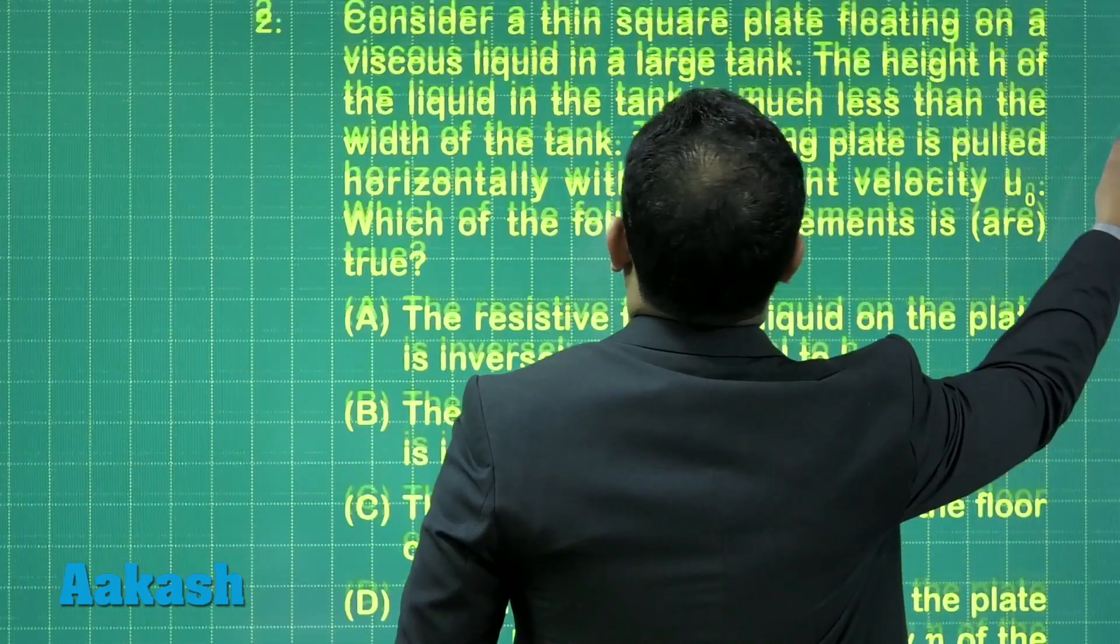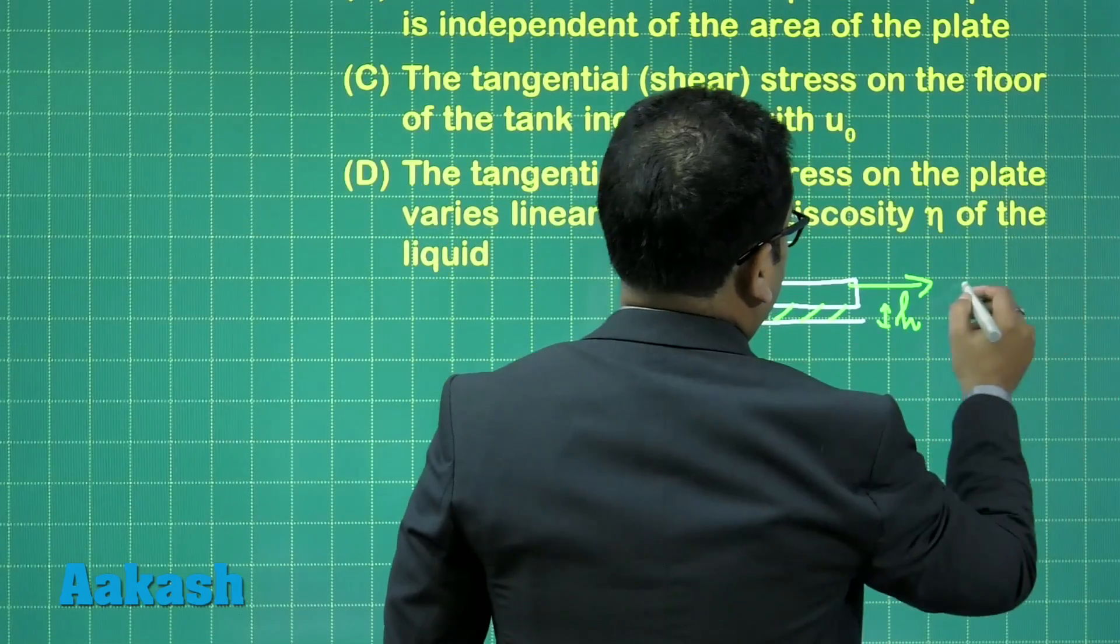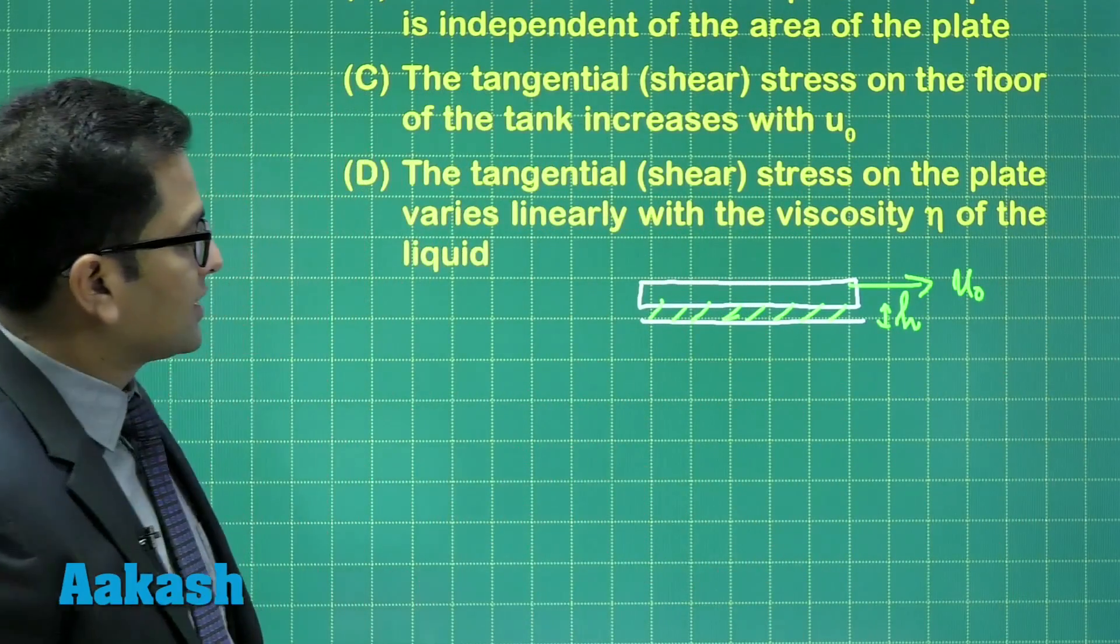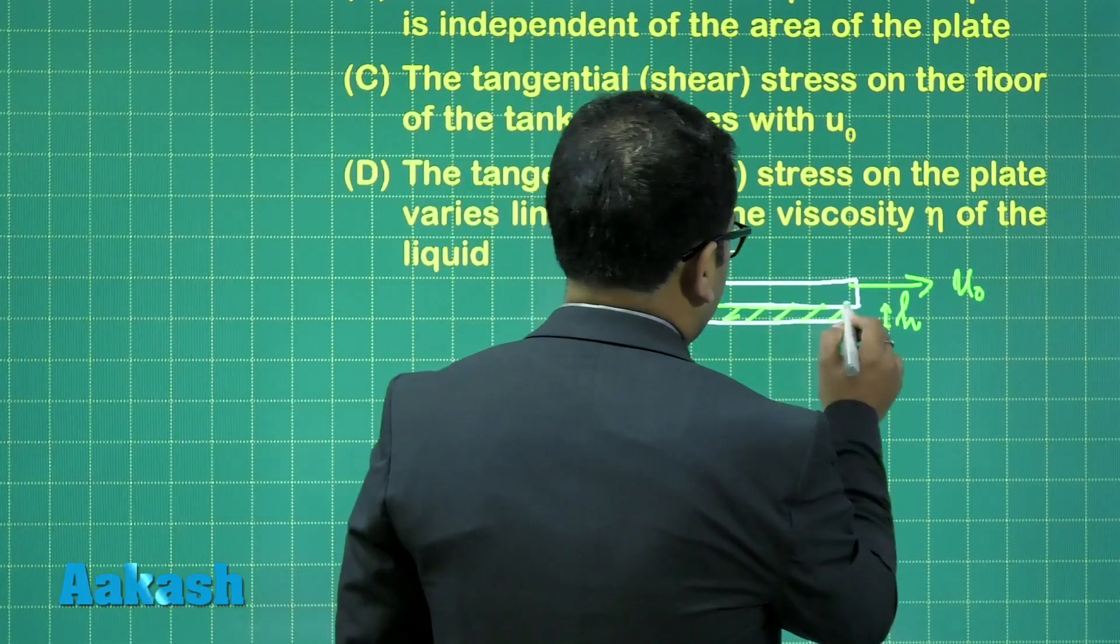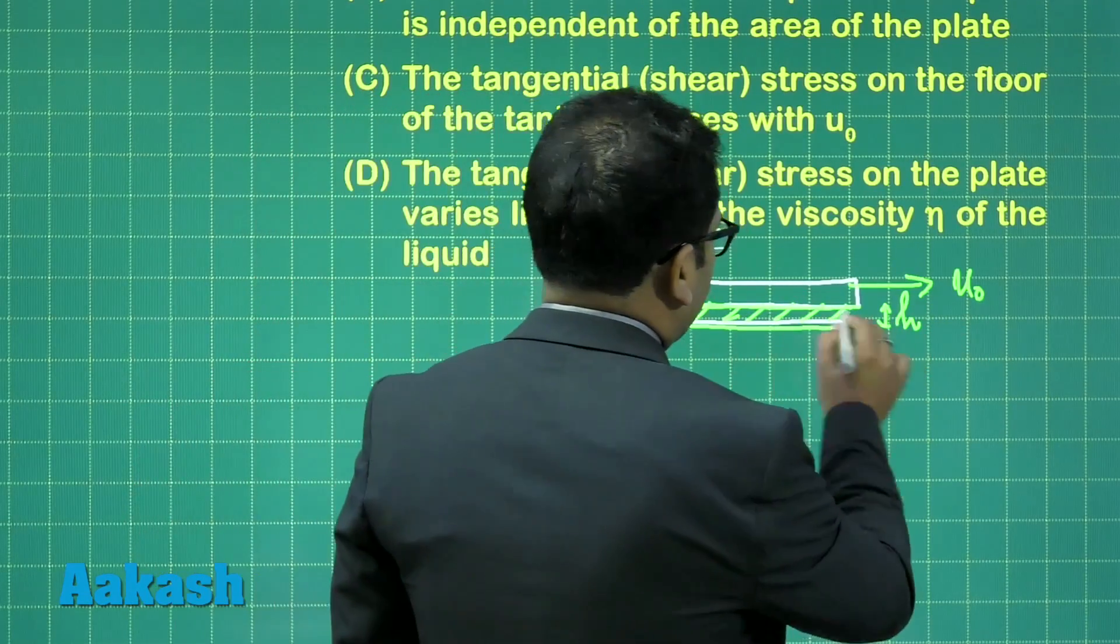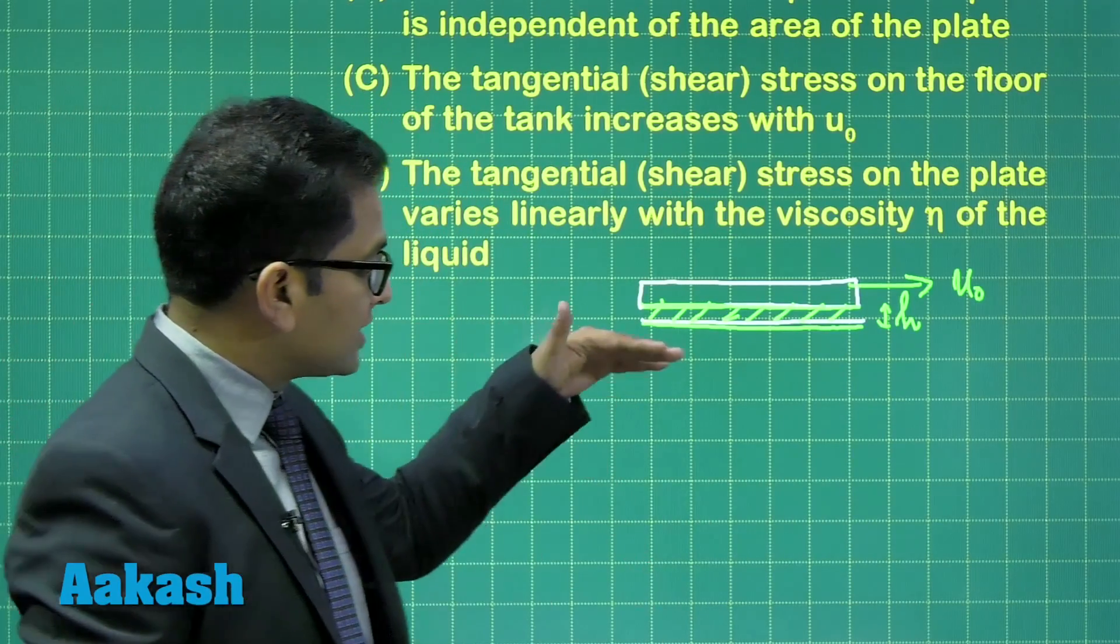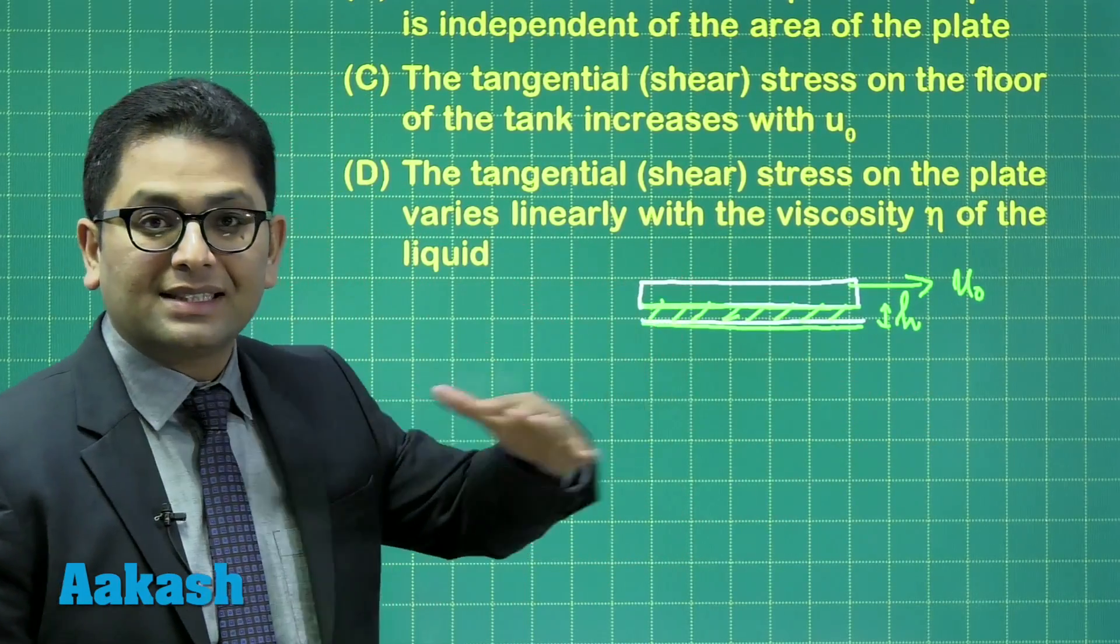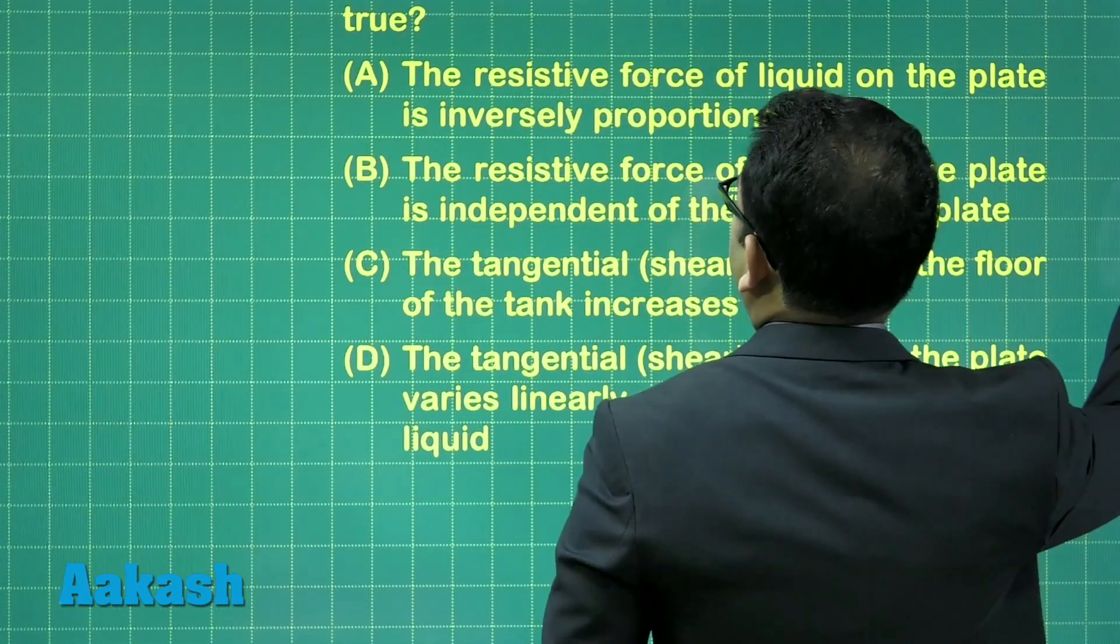Let's see. Yes, it has been pulled with a constant speed U₀ is there. So this is U₀. Now, according to the concept of viscosity, U₀, the layer of liquid which is in immediate contact with this cross section will have a velocity U₀. And the lowermost layer will have a velocity zero. Yes? The layer which is in immediate contact with the plate is U₀. And the lowermost layer which is in contact with the ground, the floor, the speed would be zero.